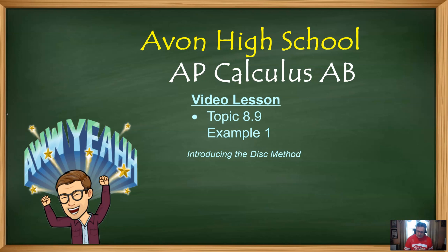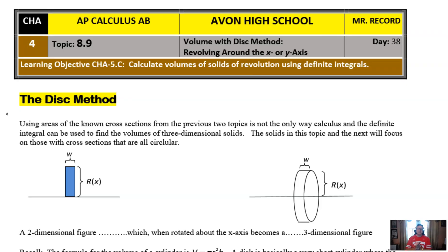Example one is going to illustrate our very first disc method. I'm using the notes that I've assembled for my students at Avon High School. You're able to grab those off the comment section if you would like to, and you can follow right along. So what is this thing called the disc method? Well, we've already known that we could find the volumes of solids using these cross sections. That's the previous two topics content, typically 8.7 and 8.8. Now, that's not the only way that you can find volumes.